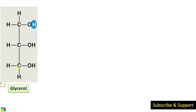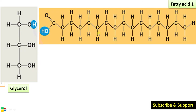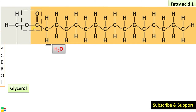This is glycerol — a three-carbon compound with an OH group at each carbon. Fatty acids are long-chain hydrocarbons with a COOH or carboxyl group. The OH group of the first carbon of glycerol combines with fatty acid 1 by an ester linkage, with the release of water. This OH and H are released as water, and the linkage formed is called the ester linkage.